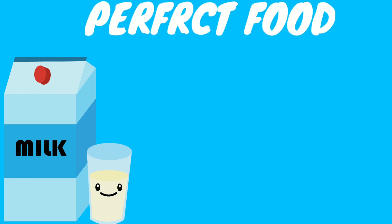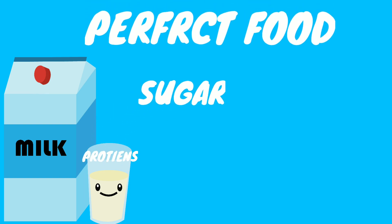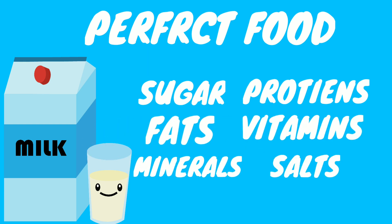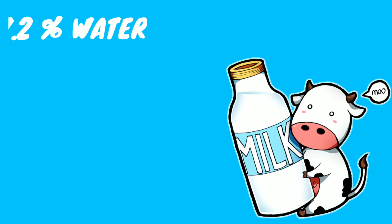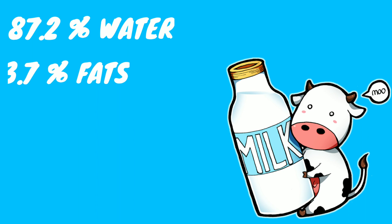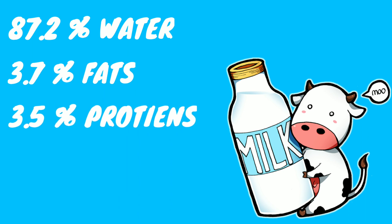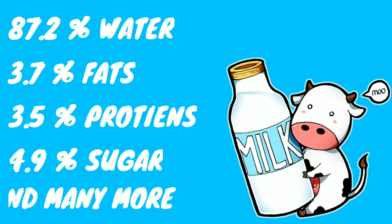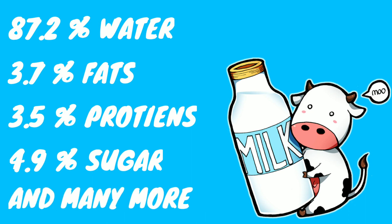From the very beginning, milk has been known to be the perfect food. It contains all the nutritious elements — sugar, proteins, fats, vitamins, minerals, salts and water — needed by our body. Cow's milk contains 87.2% water, 3.7% fats, 3.5% proteins, 4.9% sugar, and many minerals and vitamins.